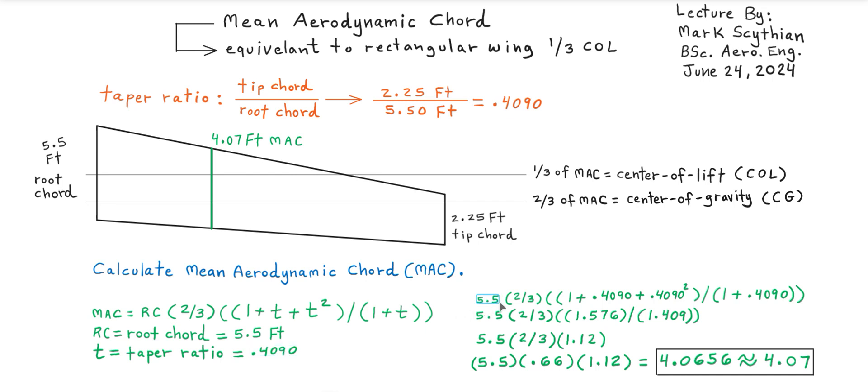So then we substitute the components into the MAC formula. Simplify in orders of operation so that it leaves the mean aerodynamic chord of the given wing at 4.07 feet mean aerodynamic chord from the leading edge to the trailing edge.